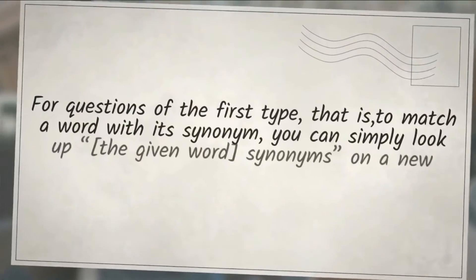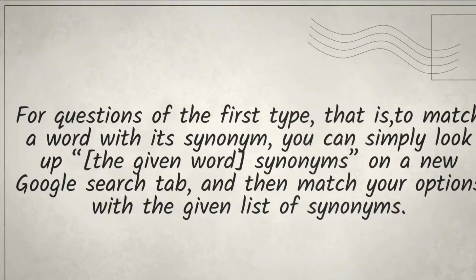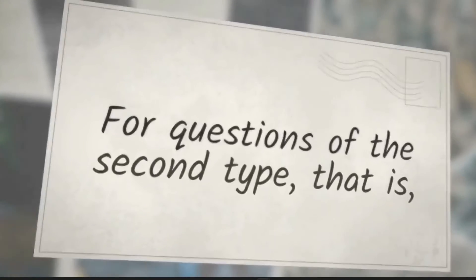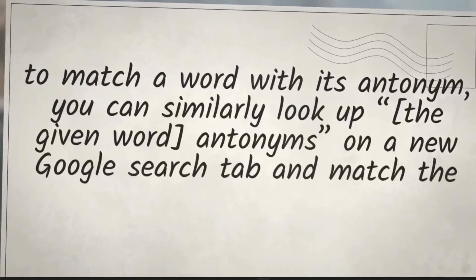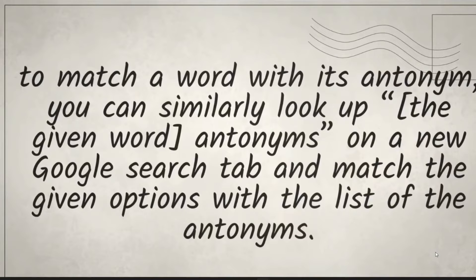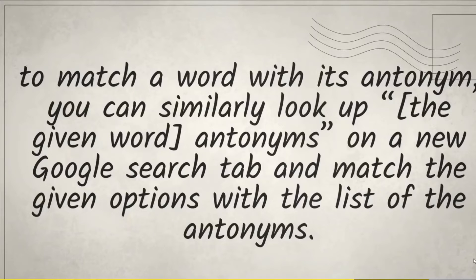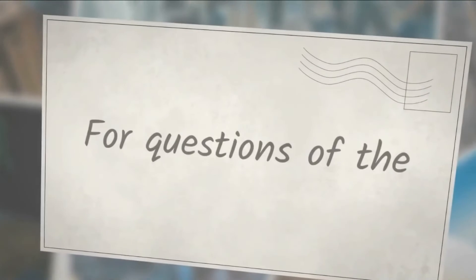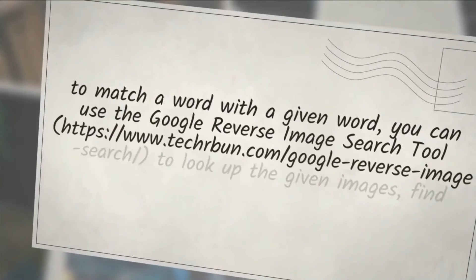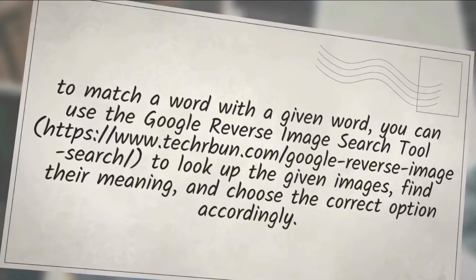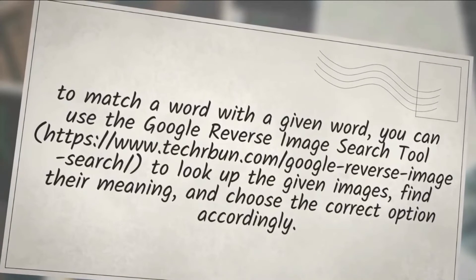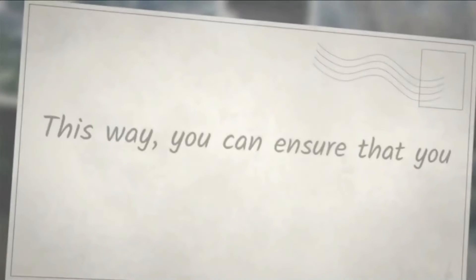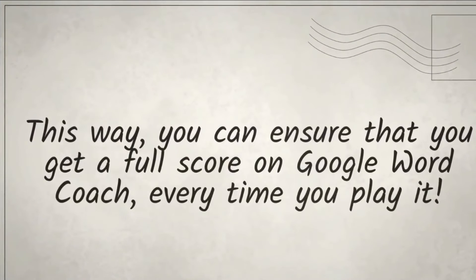For questions of the first type — matching a word with its synonym — you can simply look up the given word's synonyms on a new Google search tab, and then match your options with the given list of synonyms. For antonym questions, you can similarly look up the given word's antonyms on a new Google search tab and match the given options. For image questions, you can use the Google reverse image search tool to look up the given images, find their meaning, and choose the correct option. This way, you can ensure that you get a full score on Google Word Coach every time you play it.